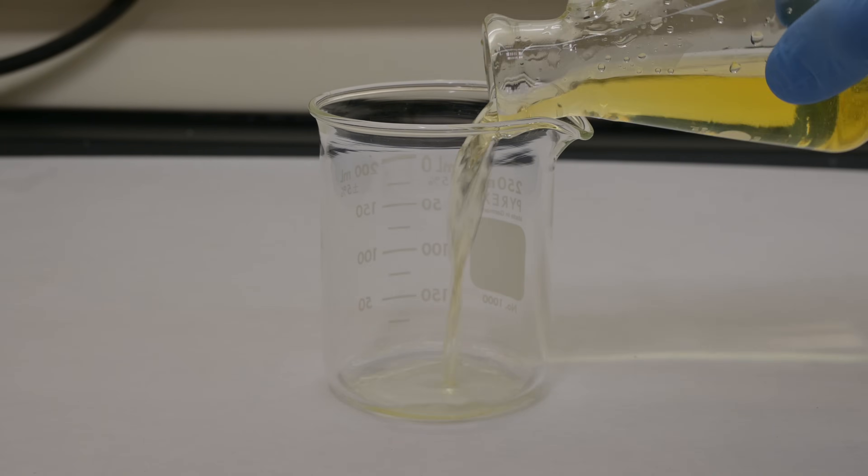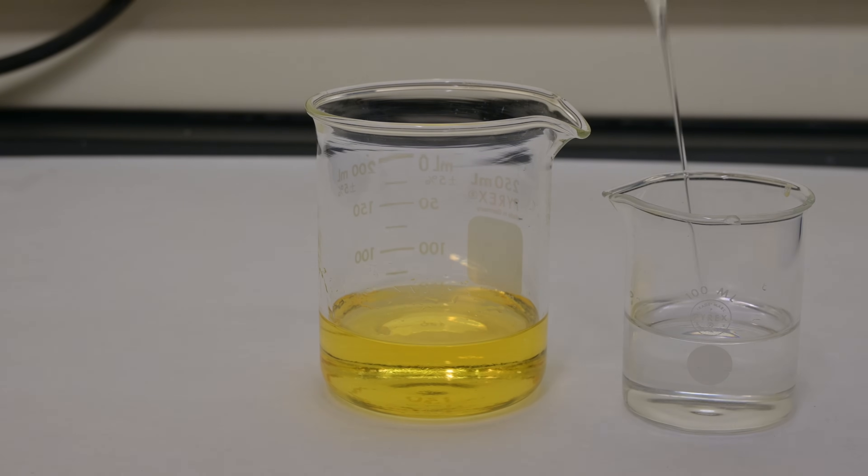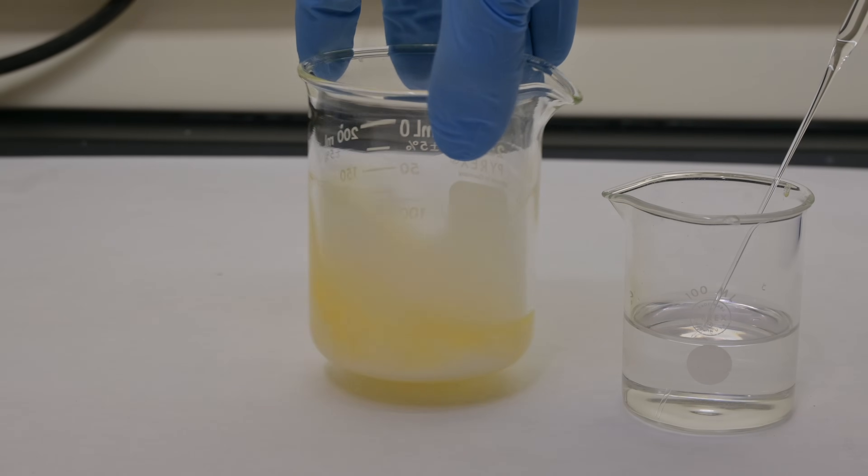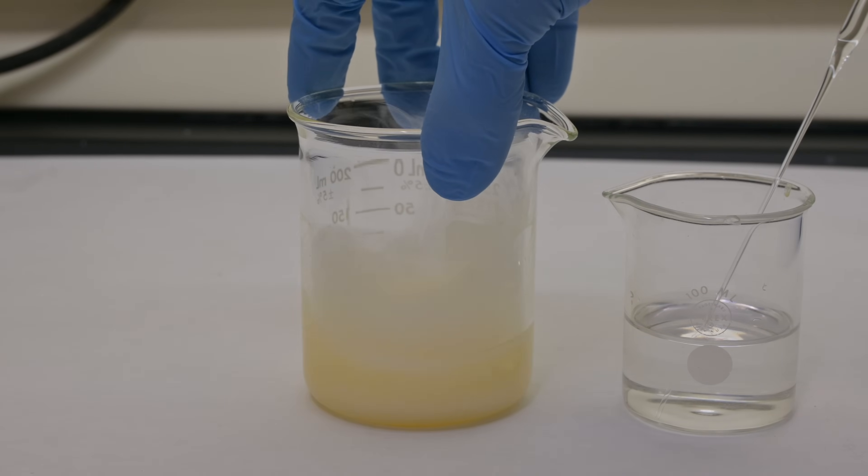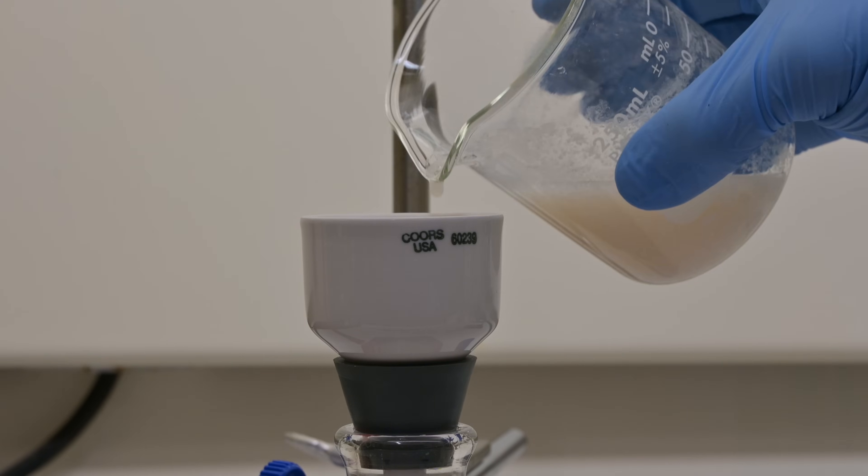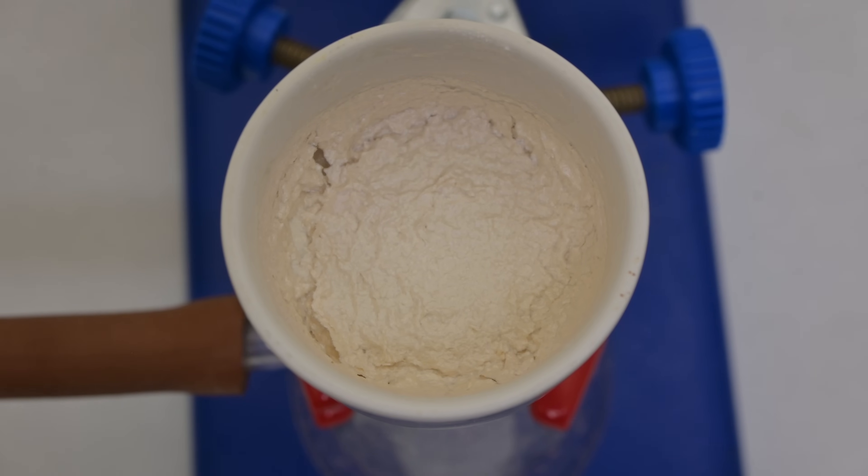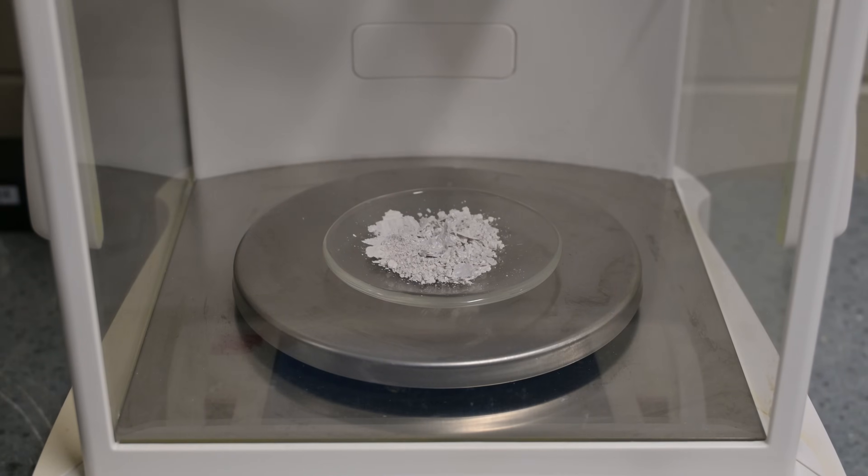Following the filtration, the solution remains basic and contains our hydantoin intermediate, dissolved within it. To isolate the desired Dilantin, we acidify the filtrate carefully by adding dilute hydrochloric acid until the pH drops significantly. Acidification protonates the intermediate, dramatically reducing its solubility in water, causing it to crystallize. These newly formed crystals are then isolated by filtration and washed with cold water to remove any residual impurities, and we're allowed to dry. Our yield at this point, however, is just under one gram.